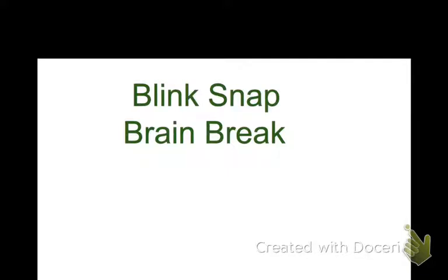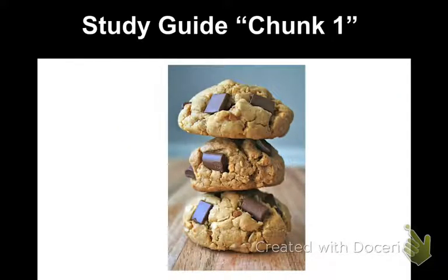Now we're going to take a quick brain break. Try to blink with one eye and snap with the opposite hand — wink your left eye and snap your right hand, then switch and wink your right eye and snap your left hand, and see how quickly you can do this. You can pause the video while you try this. Now we're going to move on to chunk one of your study guide, recapping and reviewing all of unit four so far.